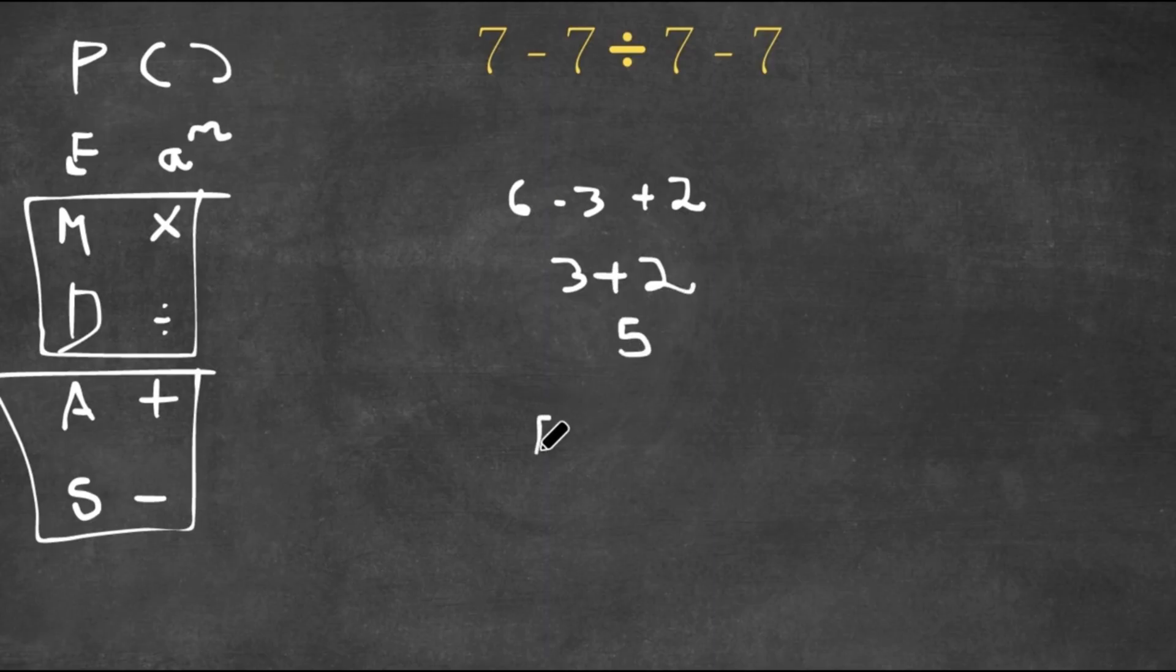Now in this case, if I have 5 plus 3 minus 7, I would do addition first because it comes first, right? So 5 plus 3 is 8, 8 minus 7 is 1.